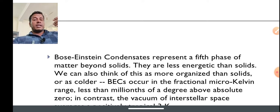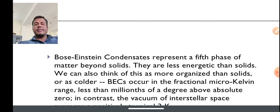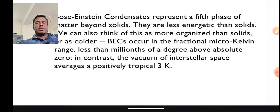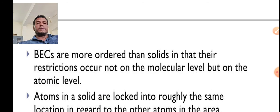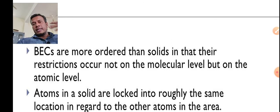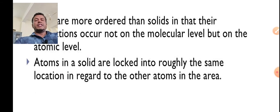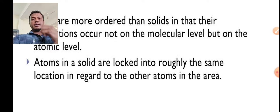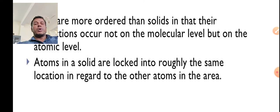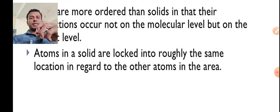We can also think of this as more organized than solids. The order in BEC is more than in solids, and interactions occur not on the molecular level but on the atomic level. At the atomic level, there are more restrictions. Atoms in a solid are locked into roughly the same location relative to other atoms in the area. All the atoms are consolidated, concentrated at a point. They appear to be a bulk of atoms at a spot.